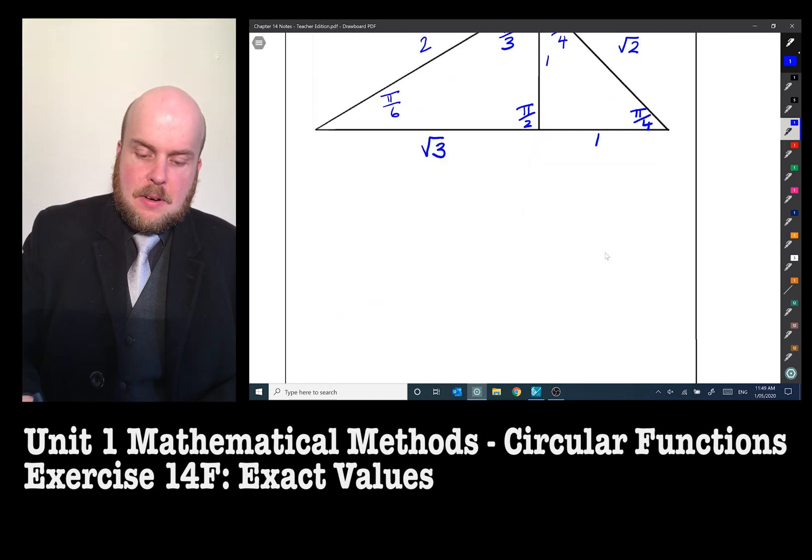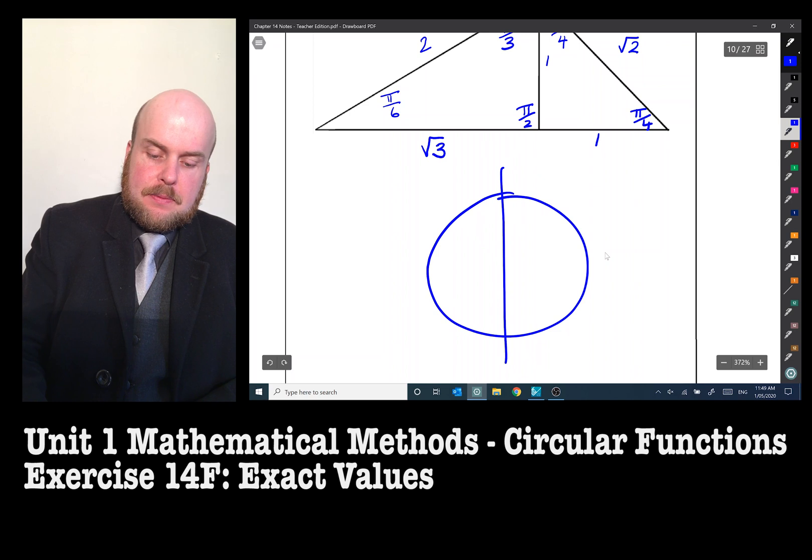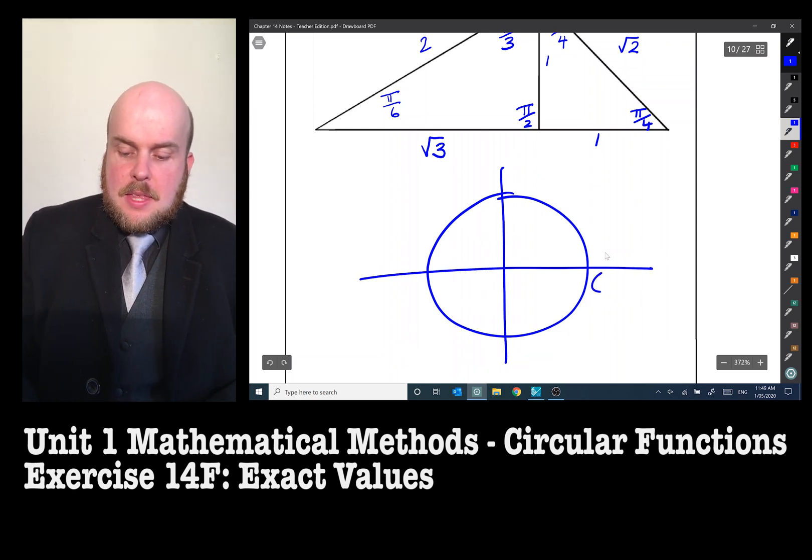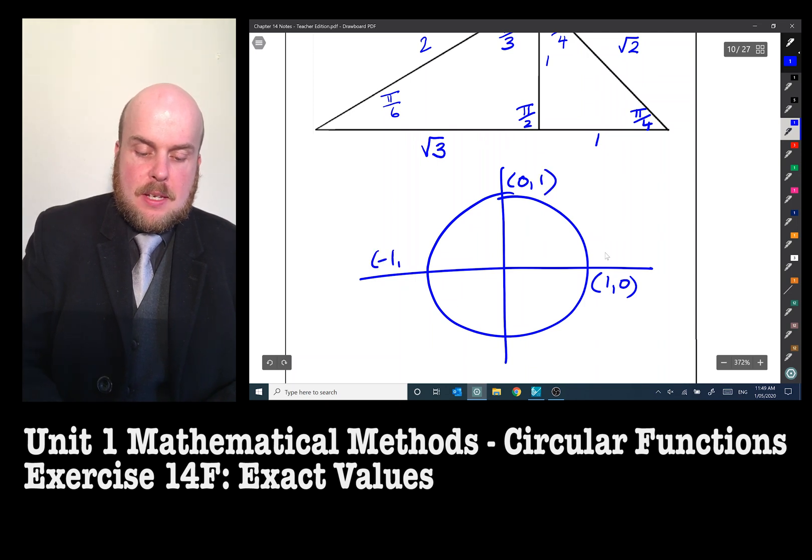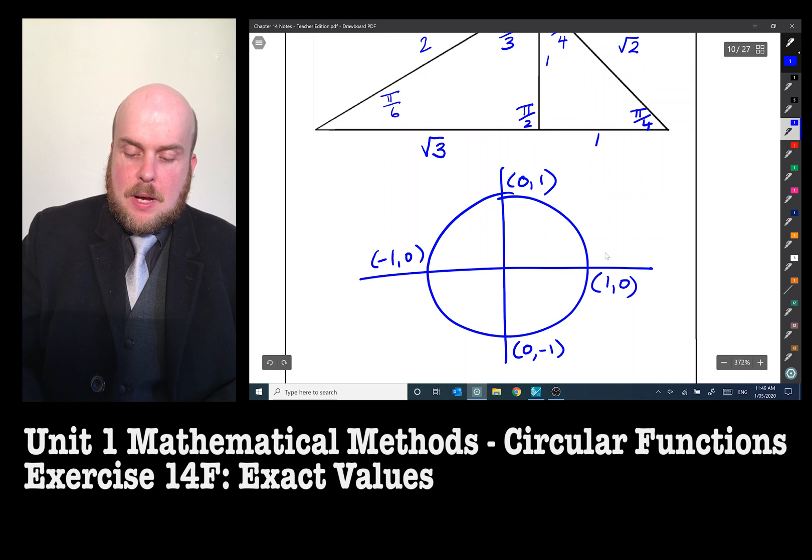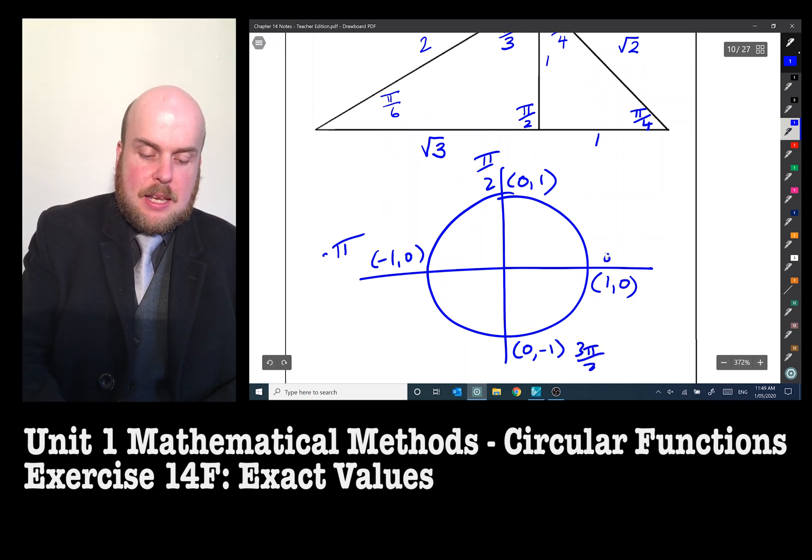So as a reminder, with our unit circle, this coordinate here is (1, 0), that is (0, 1), this is (-1, 0), and that is (0, -1). And this is zero, pi on two, pi, and three pi on two.